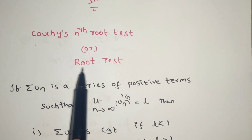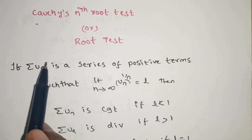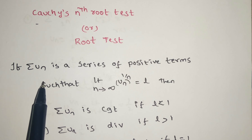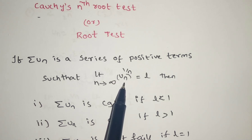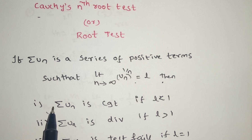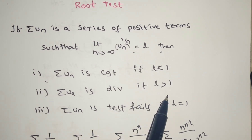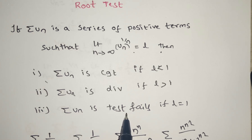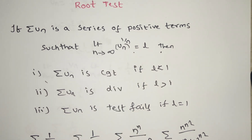Cauchy nth root test, or root test. The statement is: if Σuₙ is a series of positive terms such that limit as n tends to infinity of uₙ^(1/n) equals l, then Σuₙ is convergent if l < 1, divergent if l > 1. If the limit equals 1, the test fails.